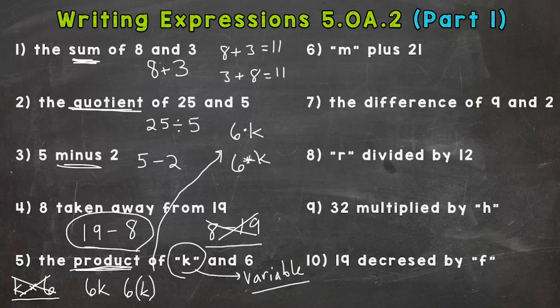Number six: m plus 21. So all we have there is m + 21. Do we remember what a letter in a math problem is called? If we need to look at the bottom, go ahead and look. Hopefully you said variable. Yes, a variable. And what does it mean? Hopefully you are thinking a missing piece to a math problem. It can be any number in the world.